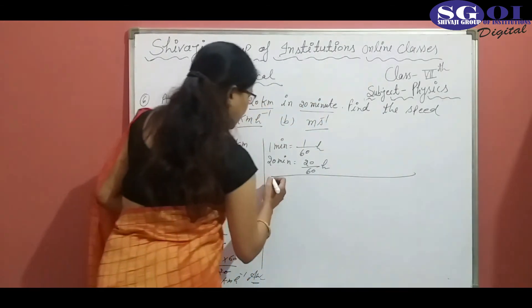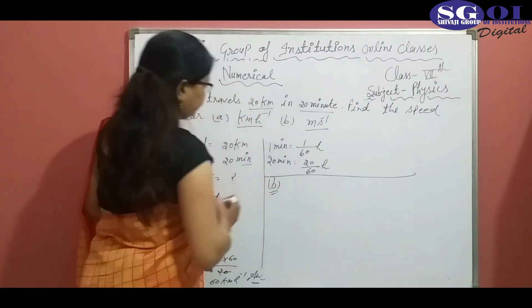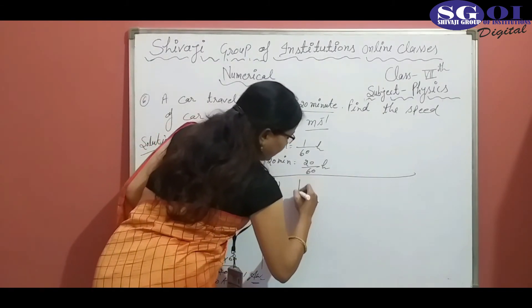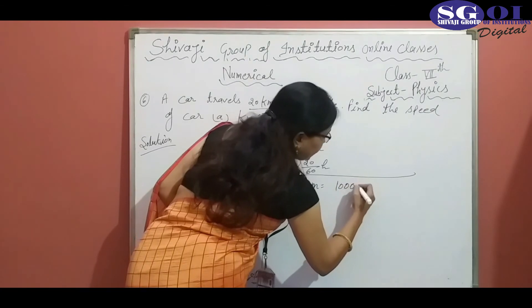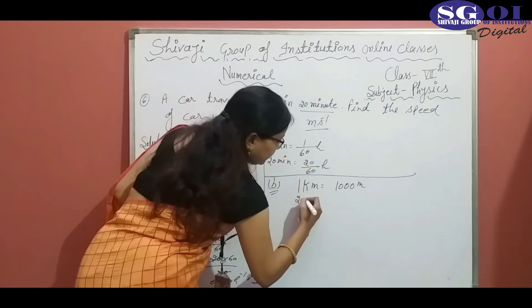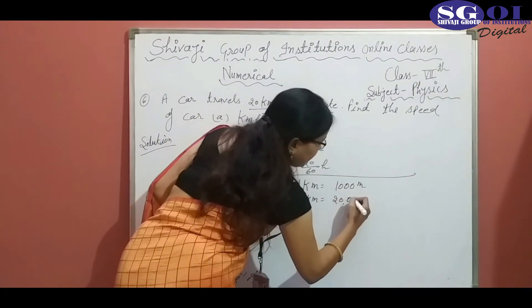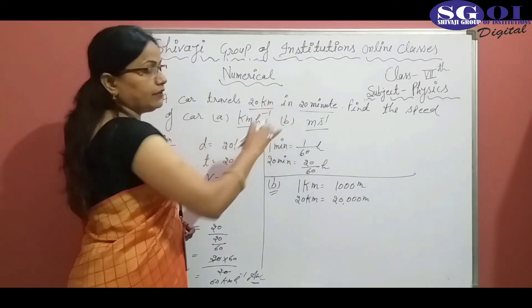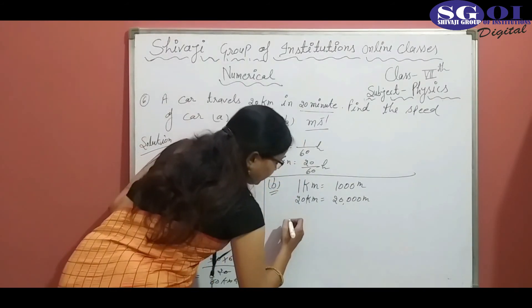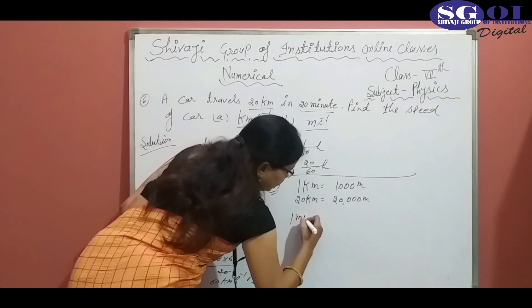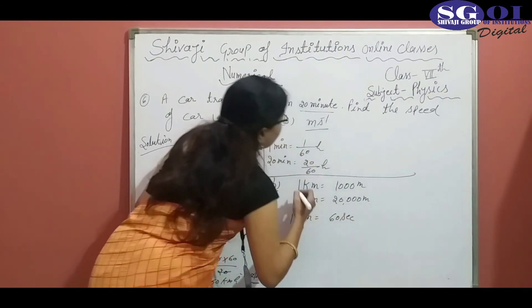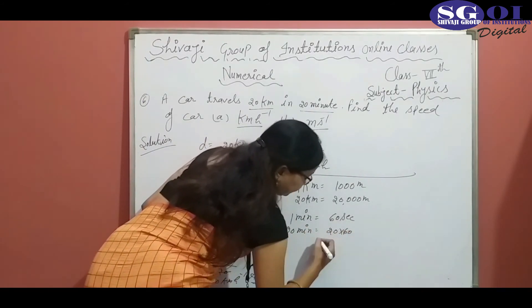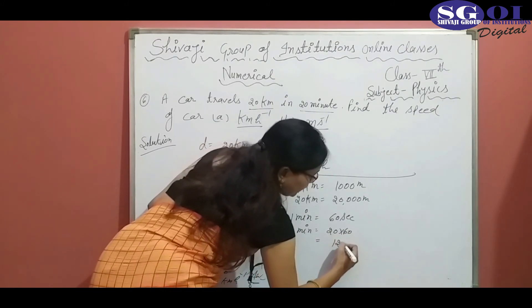Now, the speed of the car in meter per second. Firstly, we will convert kilometer into meter. As we know, 1 kilometer equals 1000 meter. So 20 kilometer equals 20,000 meter. And 20 minutes is converted to seconds: as we know that 1 minute equals 60 seconds, so 20 minutes equals 20 into 60. After multiplying, we get 1200 seconds.